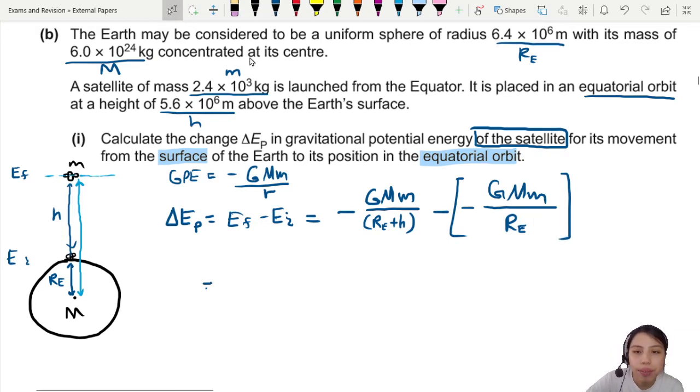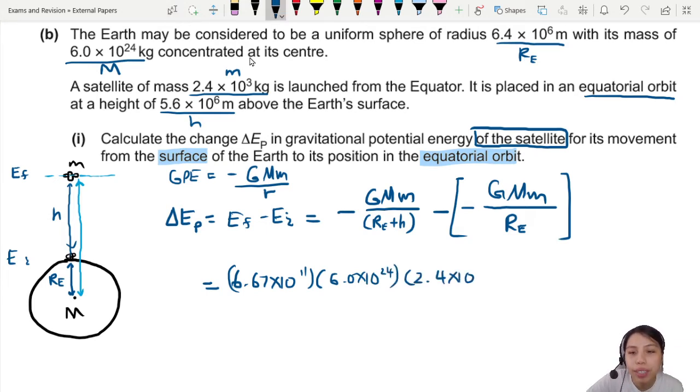So I'm going to shortcut and factorize out the GMM because it is bit troublesome to keep writing GMM. So 6.67 times 10 to the -11, mass of the Earth, 6.0 times 10^24 kg, small m of satellite, 2.4 times 10^3. I feel like I'm going to run out of space.